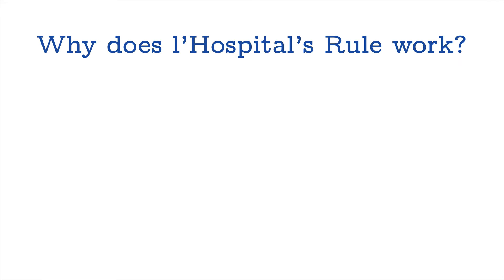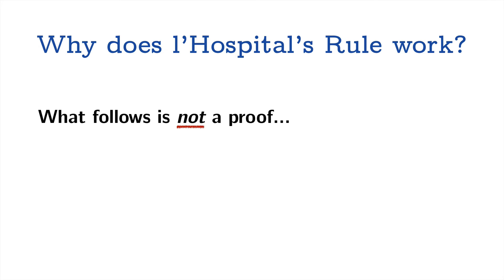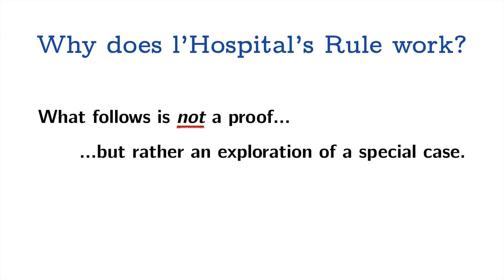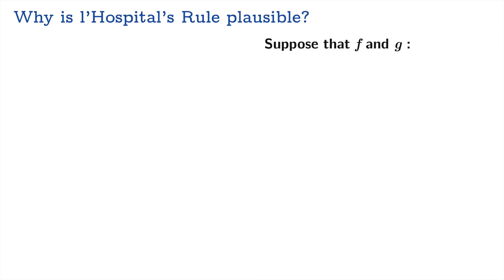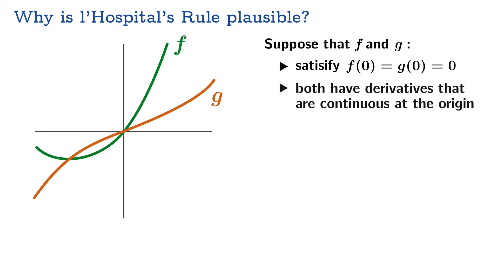Why does L'Hôpital's rule work? What follows is not a proof, but an exploration of a special case. We can't fully answer why it works, but we can address why it's plausible. Suppose that f and g both have values zero at the origin, and both have derivatives that are continuous at the origin. This second condition is much more restrictive than the hypothesis that usually comes into L'Hôpital's rule — we're looking at a more specific case.